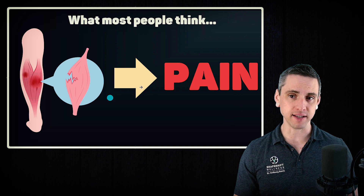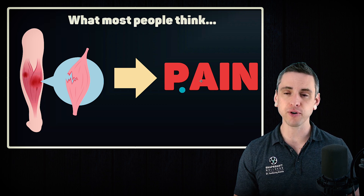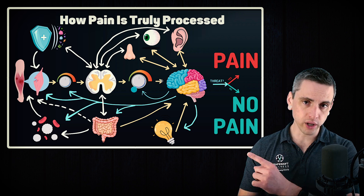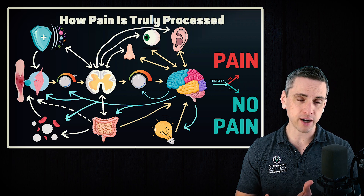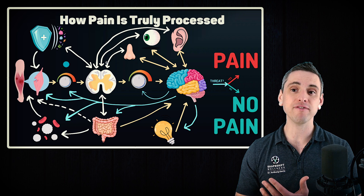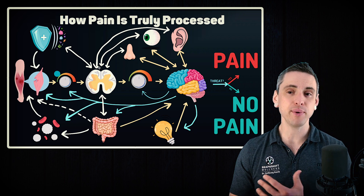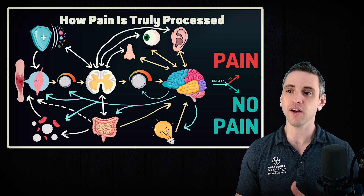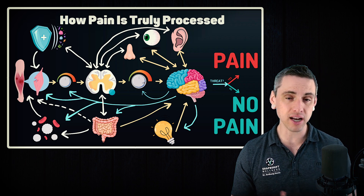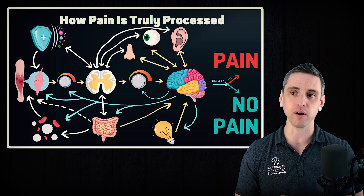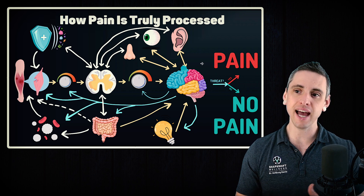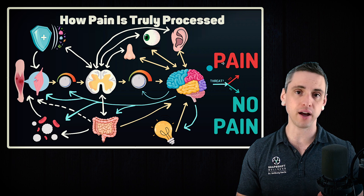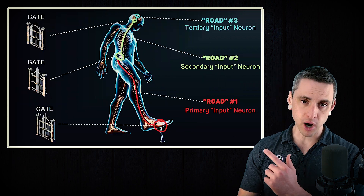Most people think that pain happens like this: you damage a tissue, like you tear a muscle, and therefore you have pain. But pain is actually processed differently. We tear a muscle, we herniate a disc — but we have volume knobs in the spinal cord, in the periphery, in the brain. We can turn the volume up or down on the signal. Our immune system, circulation, digestive system, sensory organs, brain, thoughts, and beliefs — all of these things are interacting back and forth. Ultimately, we have to determine if there is a threat, and if there is, we're going to have pain. To understand why things go wrong and why you have chronic pain, first you need to understand what happens when things go normally.